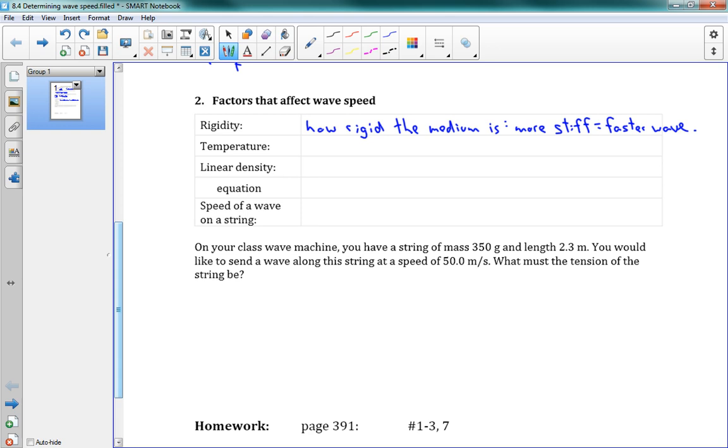Okay, the next thing that affects wave speed is temperature. And specifically, that's in gases. We would expect if something is being heated up, then the particles are all going to spread apart. It means that the particles aren't packed together as well, which means that they're not going to bump into each other as quickly, which means that if you heat it up, the wave should go slower, I think.